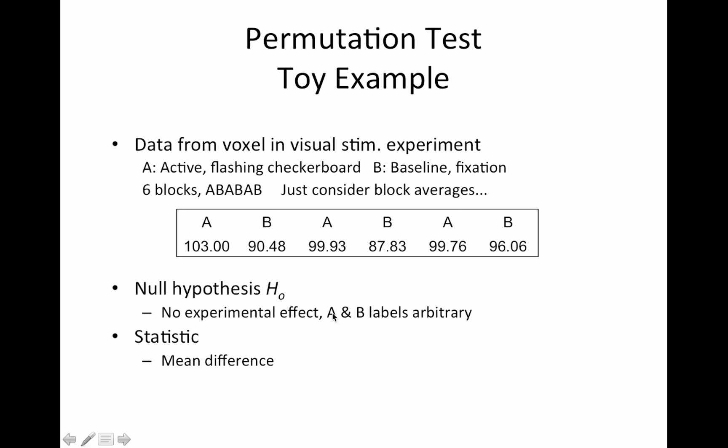So the null hypothesis is that there's no experimental effect and we want to generate the null distribution. Well if we don't have an effect then these A and B labels are completely arbitrary. So what we're going to do is we're going to shuffle these labels. If A versus B doesn't mean anything then it really doesn't matter what the labels are. And the statistic of interest here is A versus B, so it's the difference in the means or the mean difference. So that's our statistic. So what we're going to do is shuffle these labels, keep it with three A's and three B's, but just shuffle them around and we're going to compute our statistic, the mean difference, for each of those shuffles.